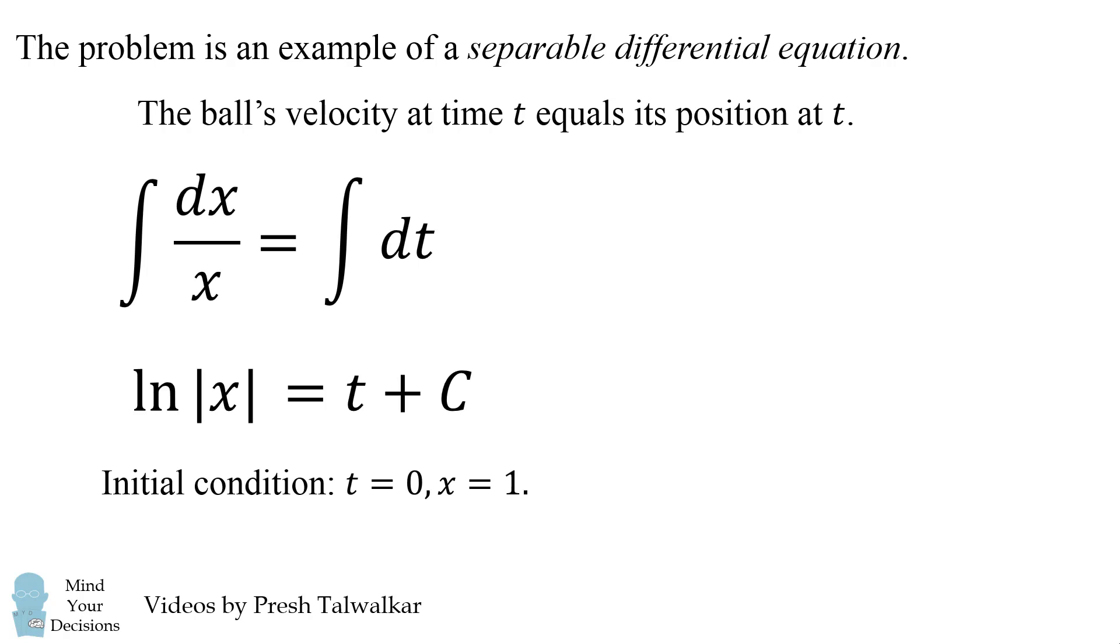Now we'll solve for the constant. We have the initial condition that when the ball starts out at t equals 0, its position x equals 1. So we substitute in those values and we can solve that c equals 0.